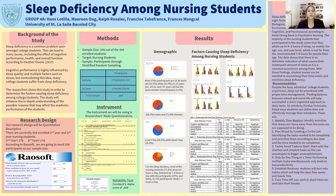Number four: only do one thing at a time — performing multiple tasks simultaneously only leads to less productivity. Number five: establish routines — routines will turn into habits which help the days flow easier and hassle-free. And lastly: take time off — work in short intervals and take a short break.